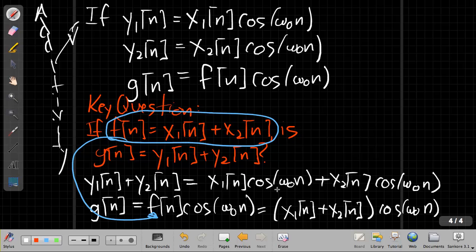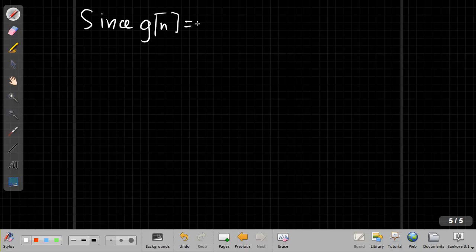Algebraically, I can distribute the cosine through and I'd have x1 times cos plus x2 times cos. So if I compare these two, these are equal. So to wrap that up, since g of n is equal to y1 of n plus y2 of n, the system is additive.